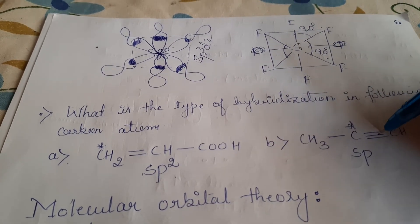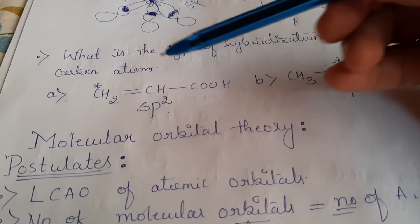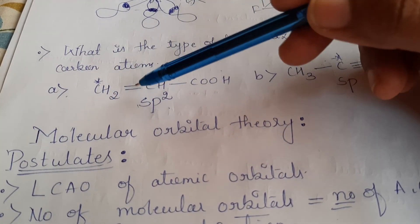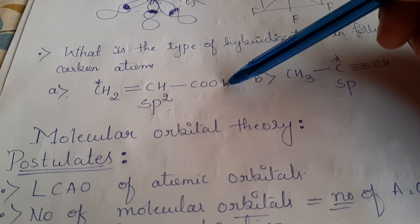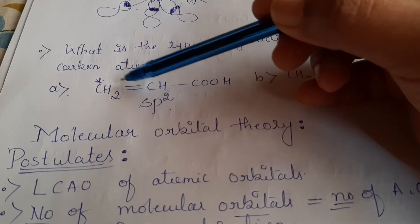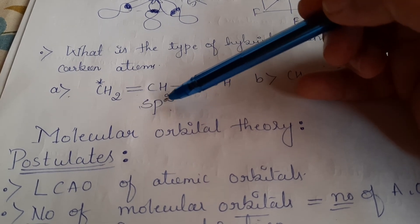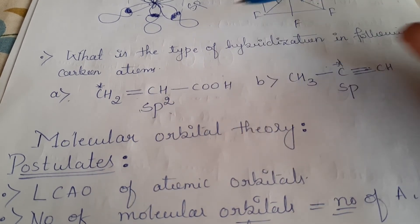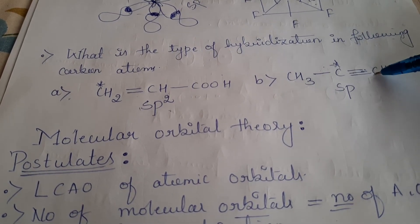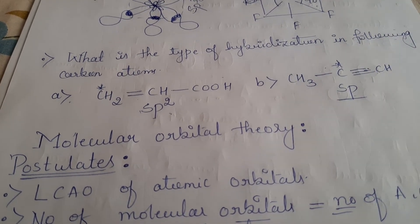We also have examples where we need to predict the hybridization directly. When we see a double bond present in a carbon compound, we can directly say it is SP² hybridization. Similarly, whenever carbon has a triple bond, we can directly say it is SP hybridization. These are quick rules for identifying the type of hybridization of each carbon atom.